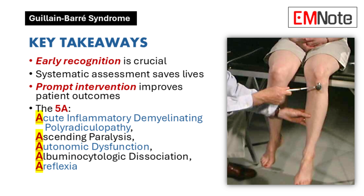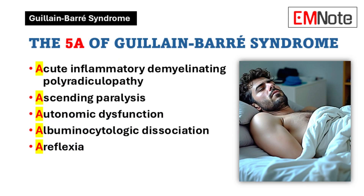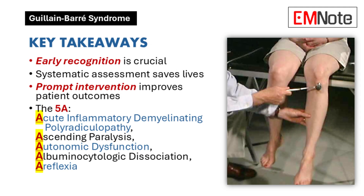Take-home message: Understanding these five key aspects provides healthcare providers with a comprehensive framework for managing Guillain-Barré Syndrome. Early recognition, systematic assessment, and prompt intervention remain crucial for optimizing patient outcomes in this potentially life-threatening condition.